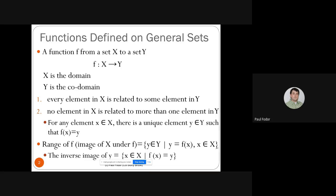The inverse image of an element y in the codomain is the set of elements in the domain such that F(x) equals y, or y equals F(x) for some x.